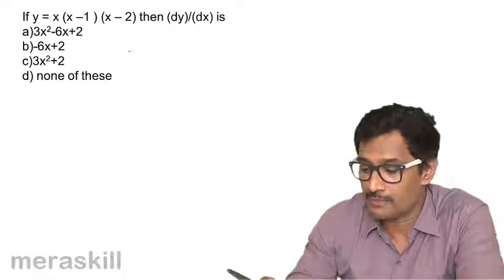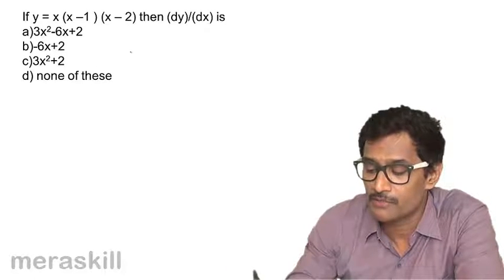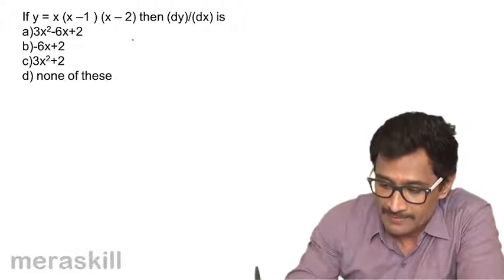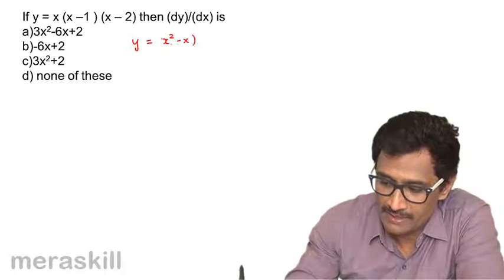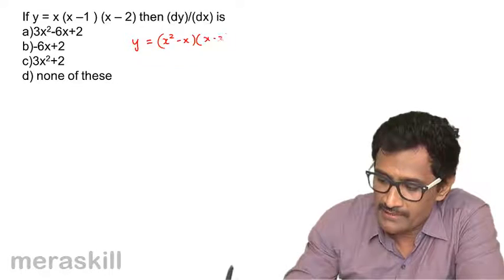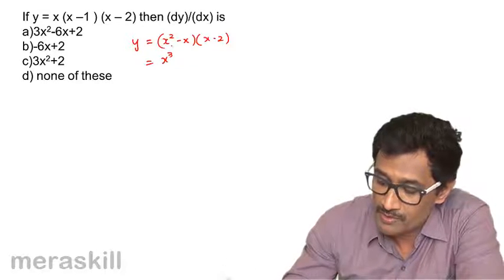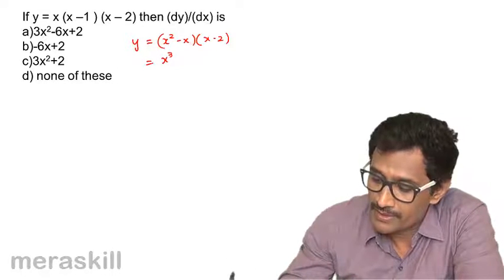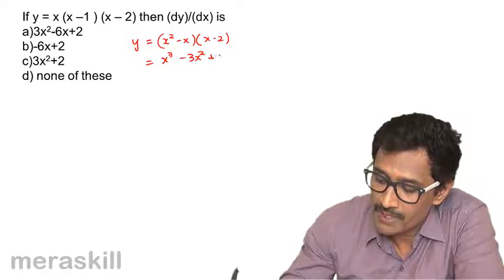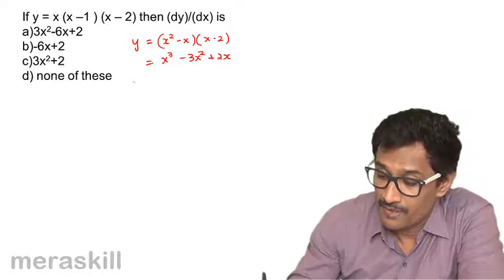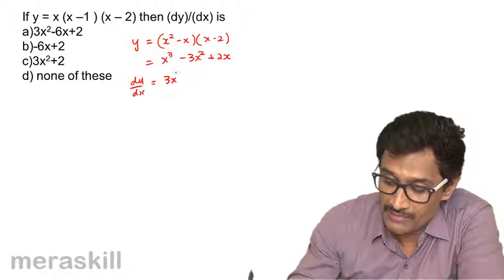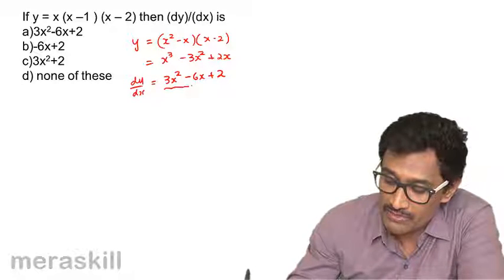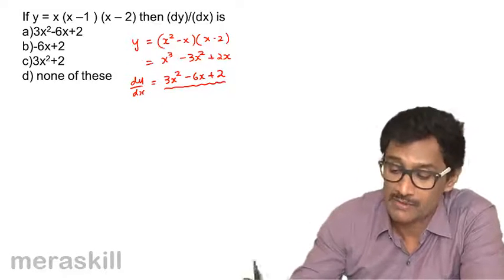Now we go back to the product rule, or we could expand the expression: (x² − x)(x − 2) = x³ − 2x² − x² + 2x = x³ − 3x² + 2x. Therefore dy/dx = 3x² − 6x + 2.